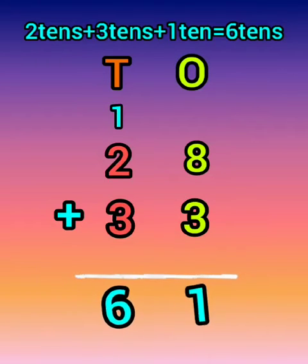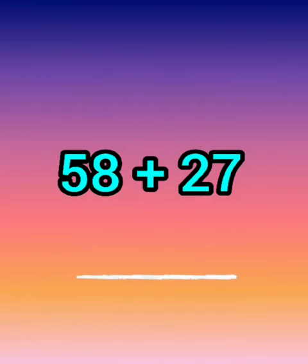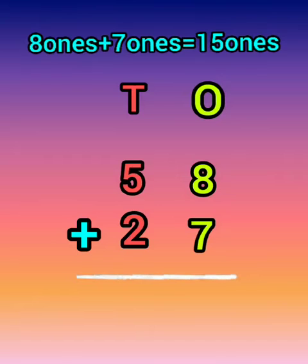Right children, now we will see another example: 58 plus 27, step 1. Add the ones: 8 ones and 7 ones equal to 15 ones.